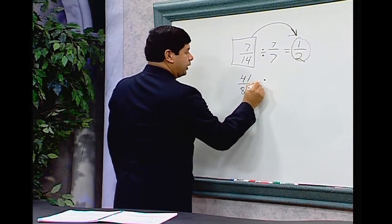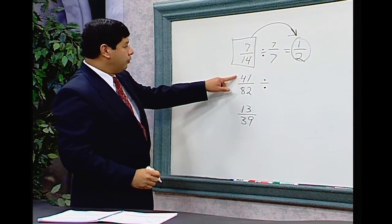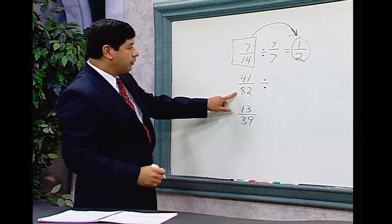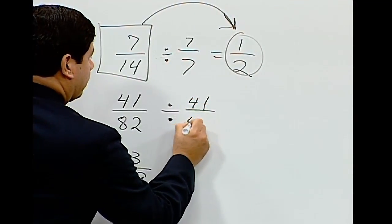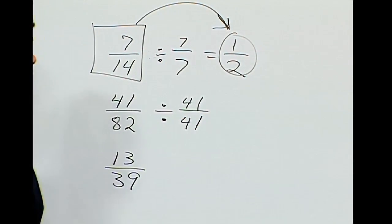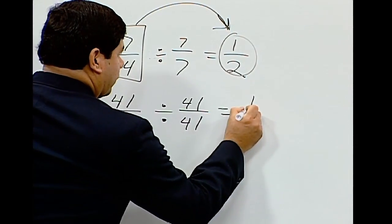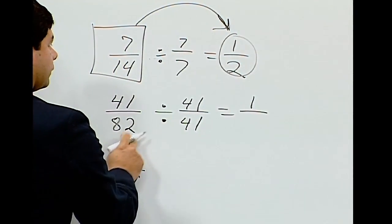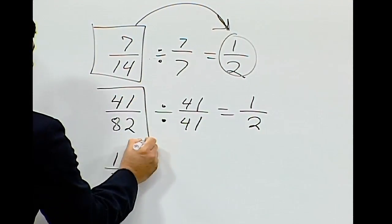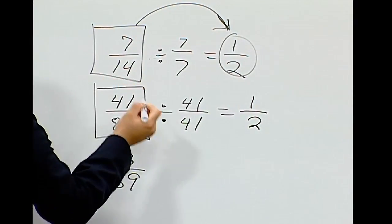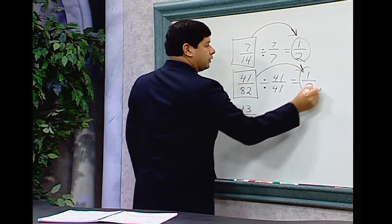Same procedure for 41 over 82. Check if the numerator divides into the denominator — it does. Divide both by 41. 41 divided by 41 is 1, and 82 divided by 41 is 2. So 41 over 82 reduces to 1 half.